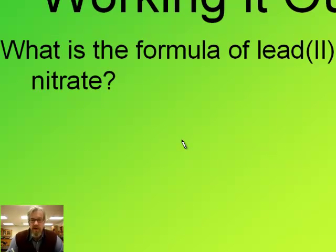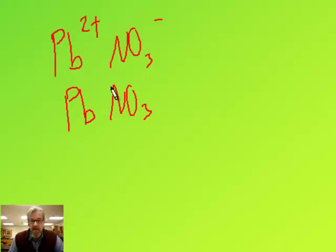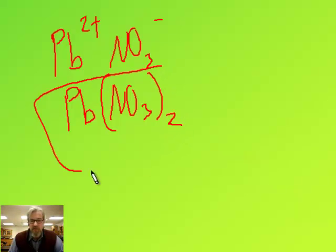What's the formula of lead two nitrate? Lead two means Pb two plus. Nitrate is a polyatomic ion with a one minus charge. So when I charge swap, Pb gets a one — we don't write ones — and nitrate gets a two, so I enclose it in parentheses because it's a polyatomic before I put the two: Pb(NO3)2.